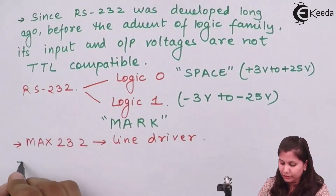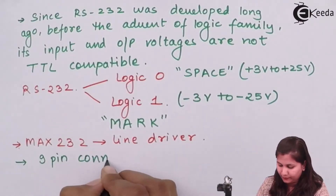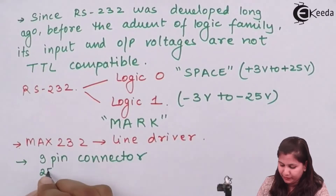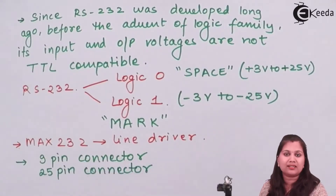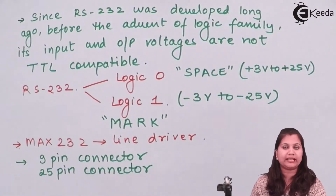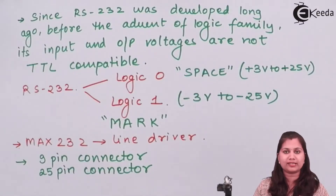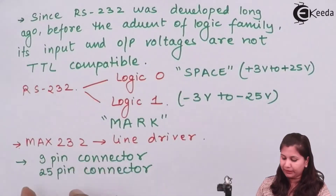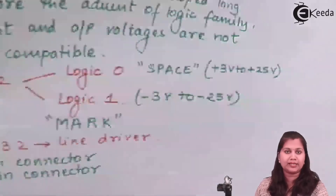This RS-232 cable comes in two connectors: a 9-pin connector and also a 25-pin connector. In the 9-pin connector, only the essential or most important connections are given. In the 25-pin connector, all the connections are given — some are frequently used and some are less used. Let us see how the 25 pins are described.